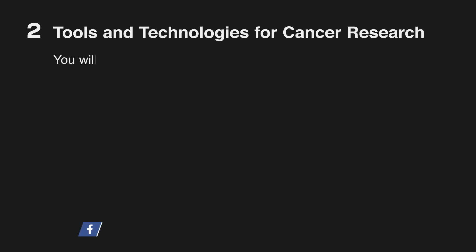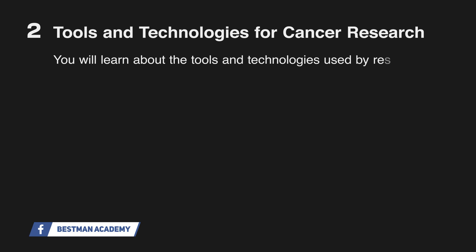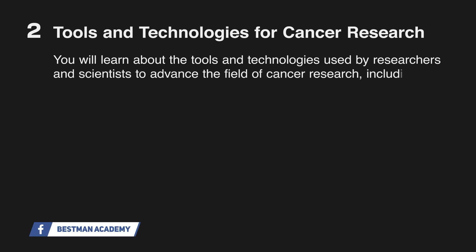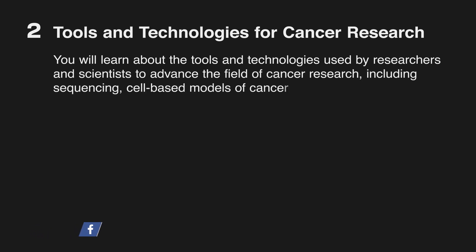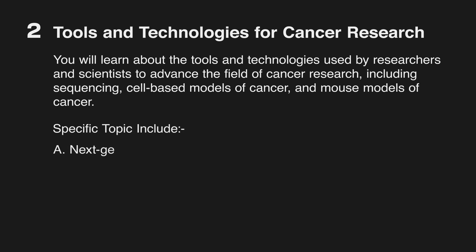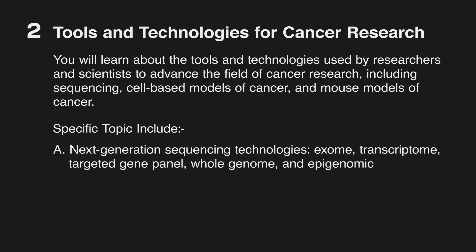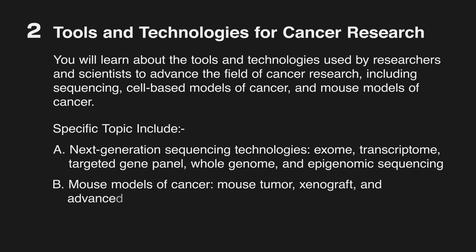The second course involves learning the tools and technologies of cancer research. You will learn about the tools and technologies used by researchers and scientists to advance the field of cancer research, including sequencing, cell-based models of cancer, and mouse models of cancer. Specific topics include next-generation sequencing technologies such as exome, transcriptome, targeted gene panel, whole genome, and epigenomic sequencing, as well as different mouse models including mouse tumor, xenograft, and advanced humanized mouse models.